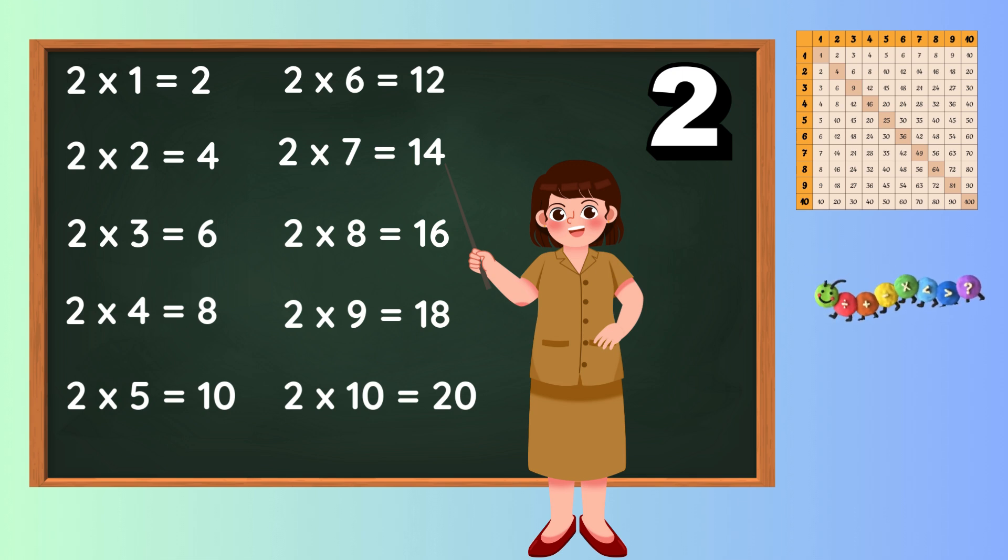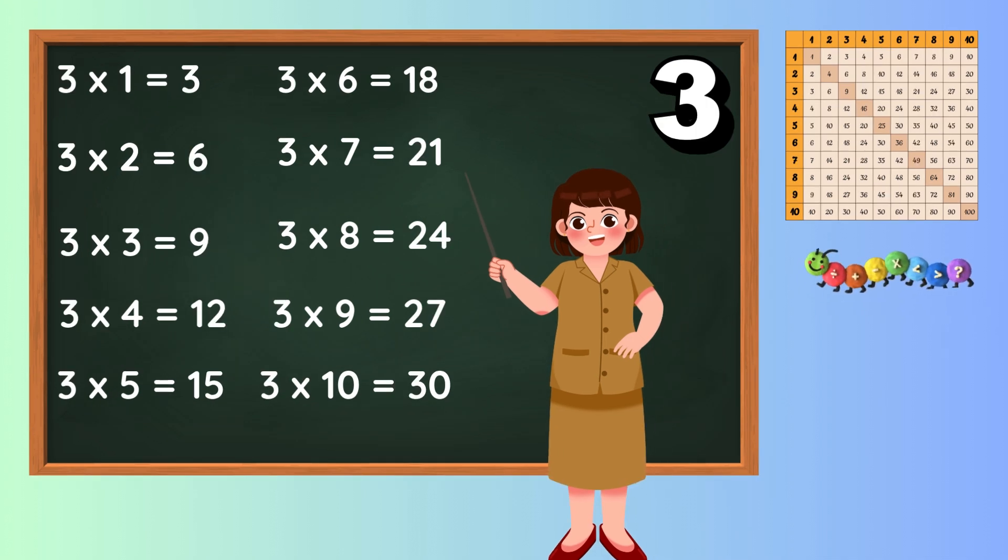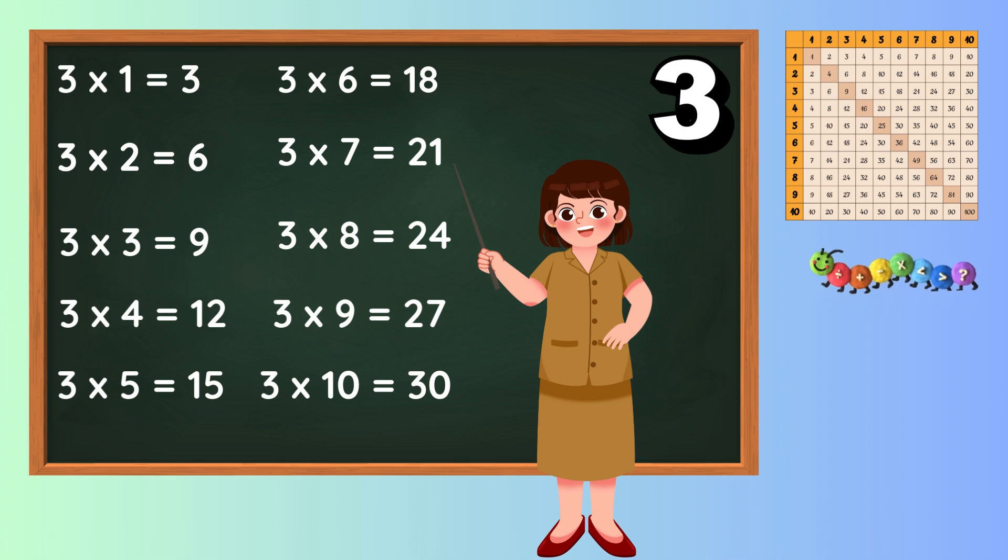3 times 1 is 3. 3 times 6 is 18, math machine. 3 times 3 is 9.